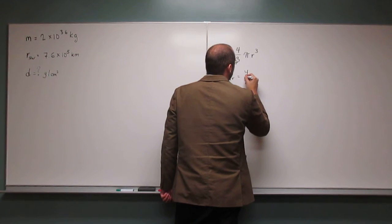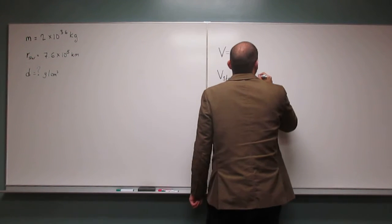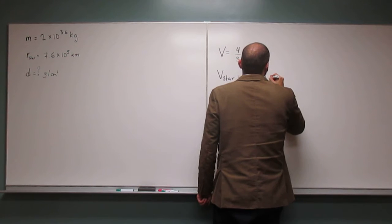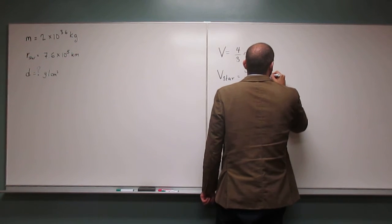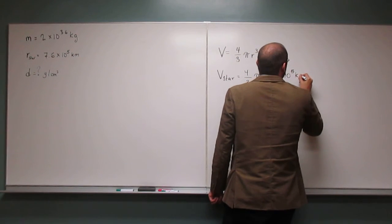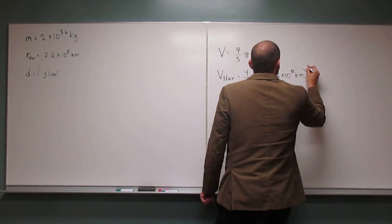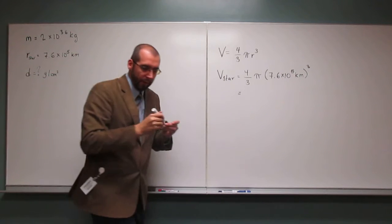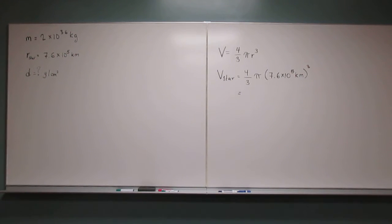So 4 thirds times pi times the radius, 7.6 times 10 to the 5th kilometers cubed. So let's solve for that.